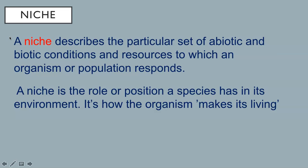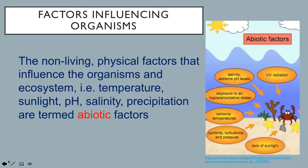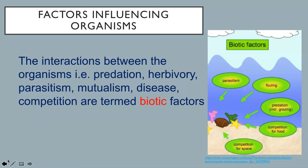Let's clarify what abiotic and biotic mean. The non-living physical features that influence the organism and ecosystem are considered the abiotic factors. These include temperature, sunlight, pH, salinity, and precipitation. The interactions between organisms, such as predation, herbivory, parasitism, mutualism, disease, or competition, are termed biotic factors. We'll discuss all of these terms a bit later in the movie.